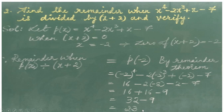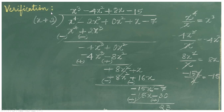Let's verify this by actual division. Verification: x raise to 4 minus 2x cube plus 0 into x square plus x minus 7, divided by x plus 2. Here, 0 into x square is added so that all the powers are in descending order — 4, 3, 2, 1 and 0 — to make the division easier and to reduce confusion. Now, dividing x raise to 4 by x gives x cube, the first term of the quotient.